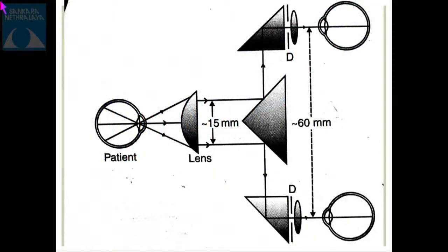The prisms in the indirect ophthalmoscope reduce the effective pupillary distance by about one-fourth, bringing it to somewhere around 15 mm, so that it passes through the condensing lens into the patient's eye.